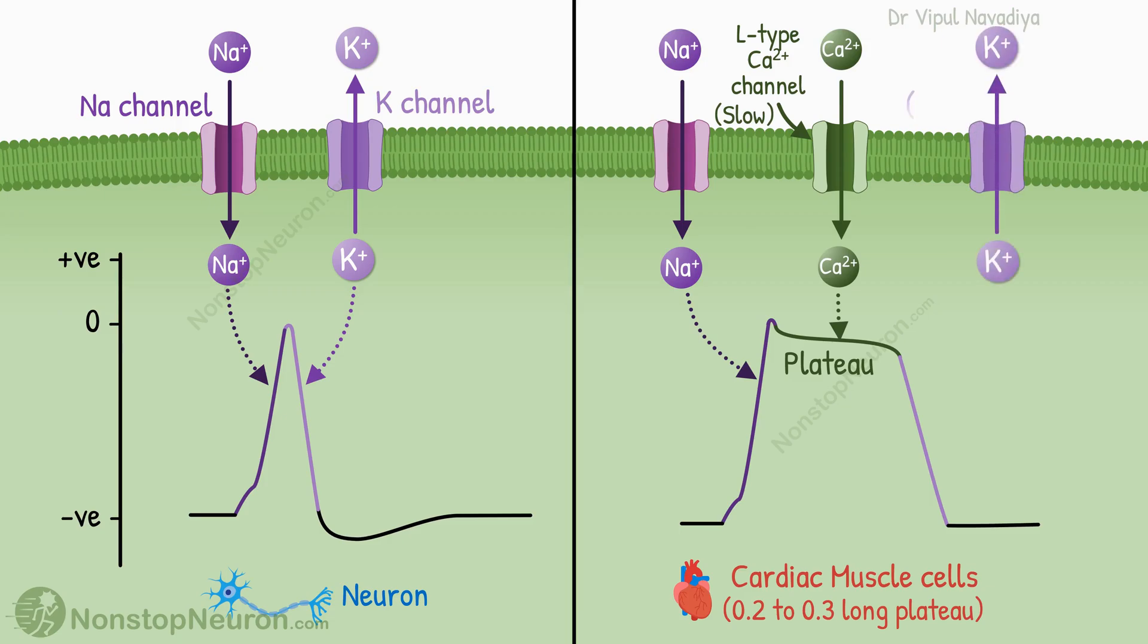Apart from this, the slower opening of voltage-gated potassium channels may also play a role. In neurons, the potassium channels open right after the upstroke, so the repolarization is quick. But the delayed opening of potassium channels delays the repolarization.